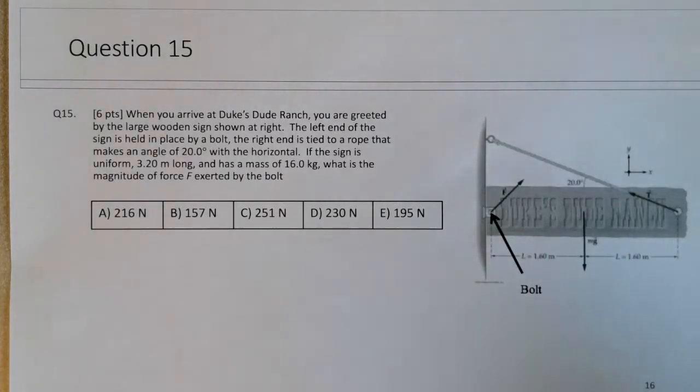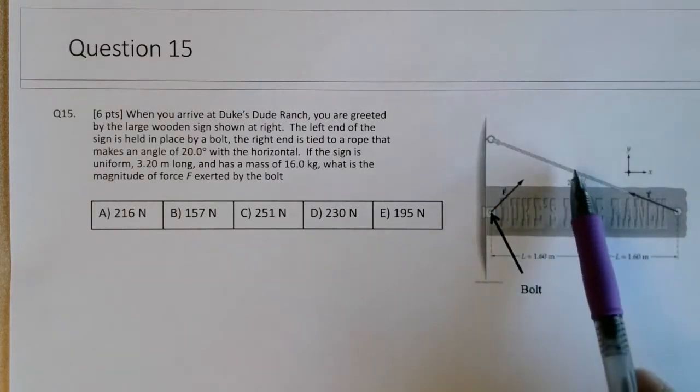Question 15. We're looking at a static equilibrium problem. We're looking at a canonical problem of a sign attached to a wall by a bolt and a string.